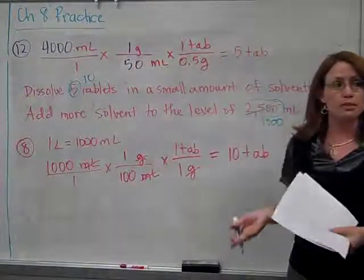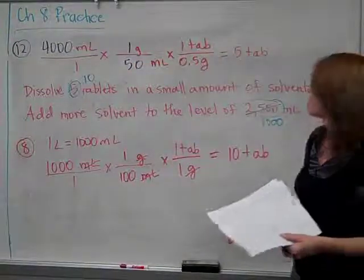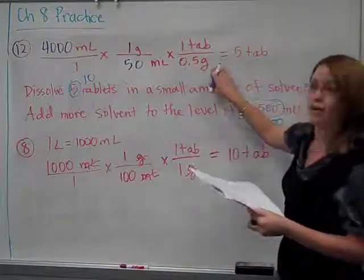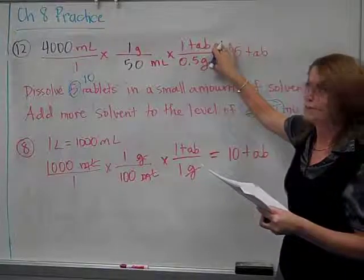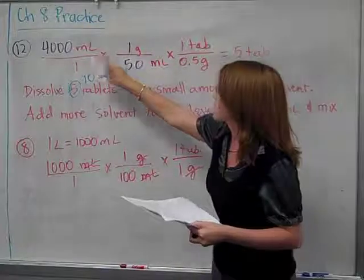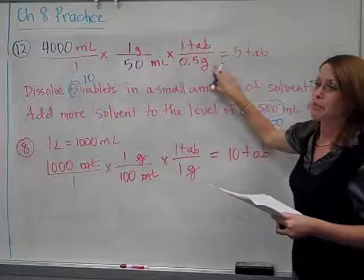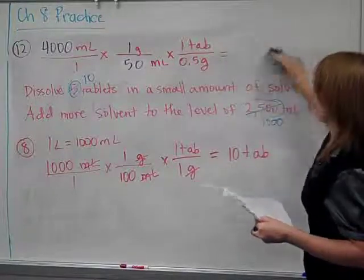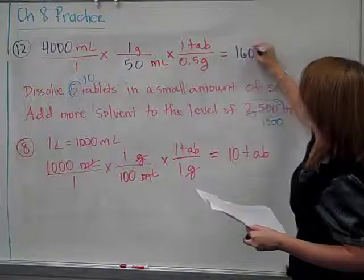Now, we're looking at tablets. Oh, that works out well. Half a gram is one tablet. So you would do 4,000 divide by 50, divide by 0.5.